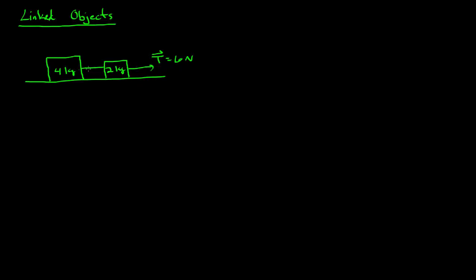So we can ask a couple questions. One would be: what's the tension right here? So that's T2. Let's call that T2, and this will be T1. We can figure out this tension, we can figure out the acceleration of the system. But let's ignore friction for now, so no friction.